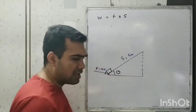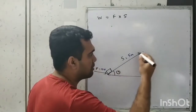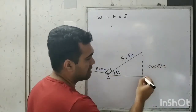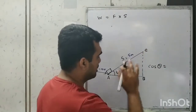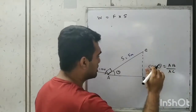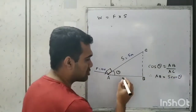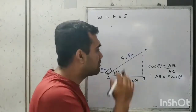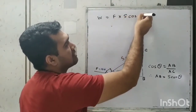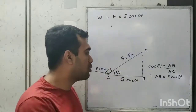We use trigonometry since this is the adjacent side and S is the hypotenuse. cos θ = AB / AC, therefore AB = AC × cos θ = S cos θ. So AB is S cos θ — let's say 4 meters. The actual formula is W = F × S cos θ, so the work done is 10 × 4 = 40 joule.